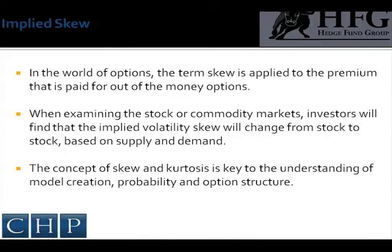If, on the other hand, the skew increased, it would become more expensive for investors to exit the position with all other factors remaining equal. In general, when markets move to a point of lower volatility but there is fear that a market could continue to move lower, the skew on the market means that protection via downside puts remains much more expensive than at-the-money puts. The CBOE has a skew rating which is available on their website. When examining stocks or commodities, investors will find that implied volatility skew changes from stock to stock based on supply and demand. Generally, an out-of-the-money call has a negative skew, while out-of-the-money puts have a positive skew.